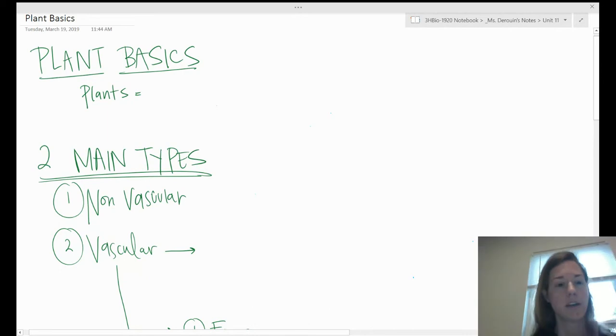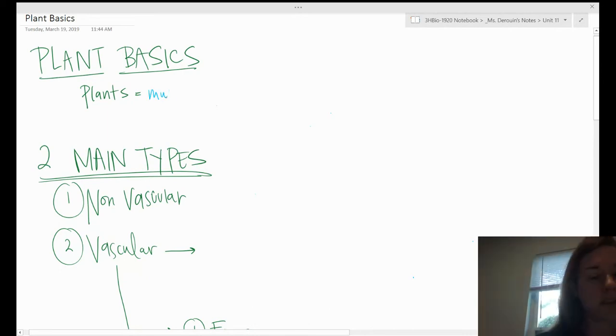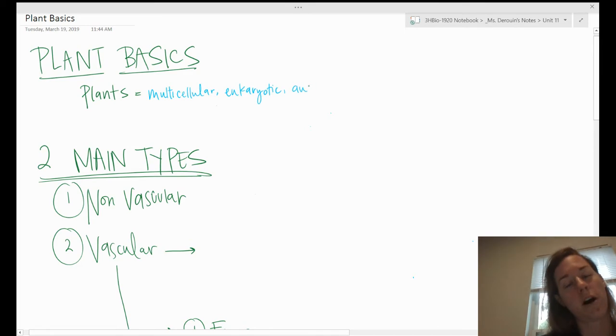Plants are always multicellular, eukaryotic, and autotrophic.